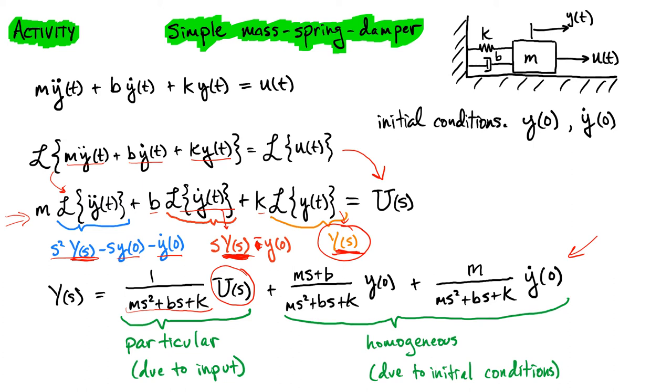So this is the term due to this input U of t, that first term. And then we also have terms that are due to any initial conditions that we have, and so we can actually separate those out into three different terms.